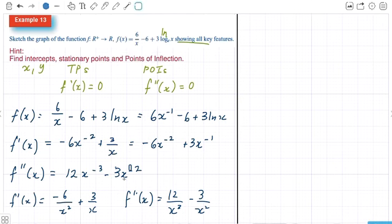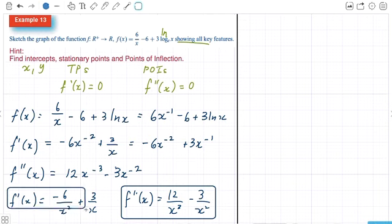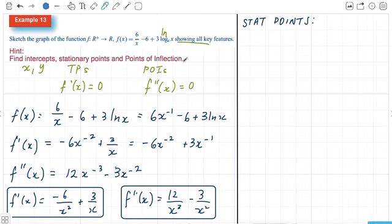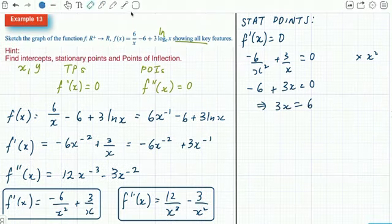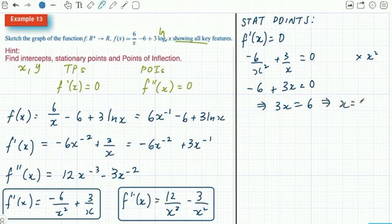I'm now going to work with those to help me find stationary points and points of inflection. For stationary points, I'm going to look at when the first derivative equals 0: -6/x² + 3/x = 0. Multiply both sides by x², which gives 3x = 6, so x = 2.